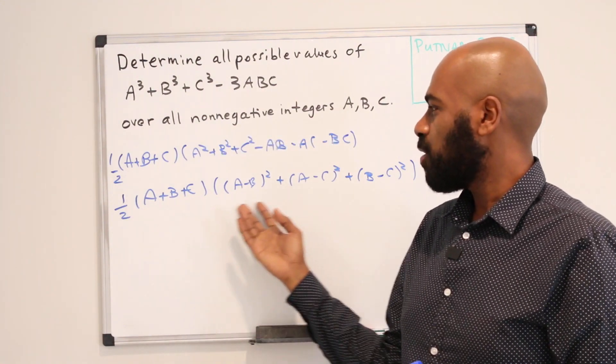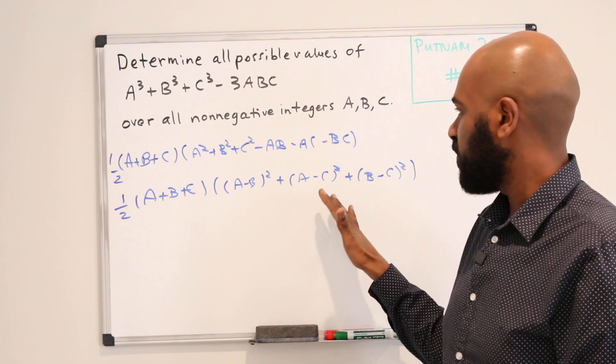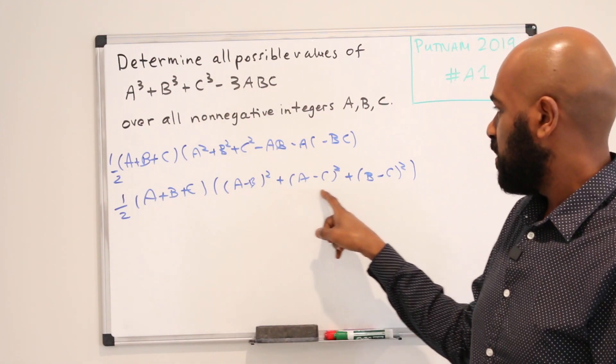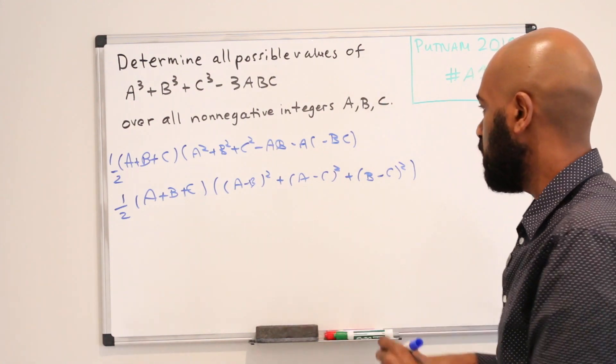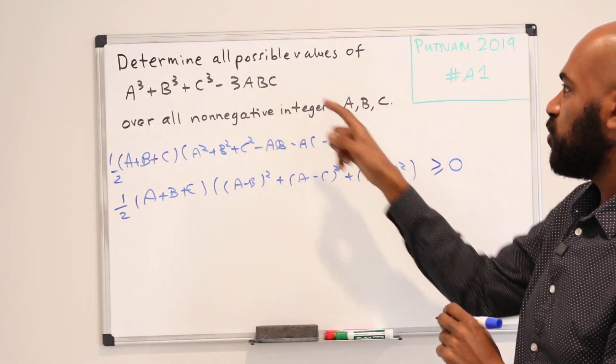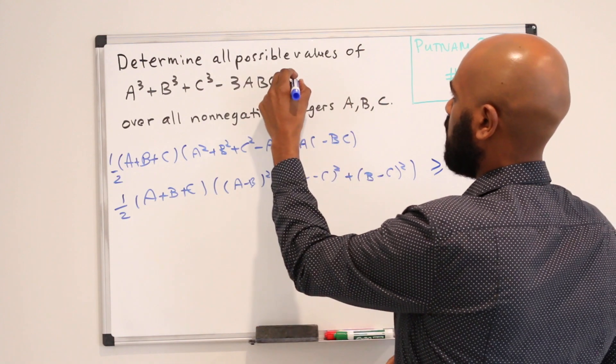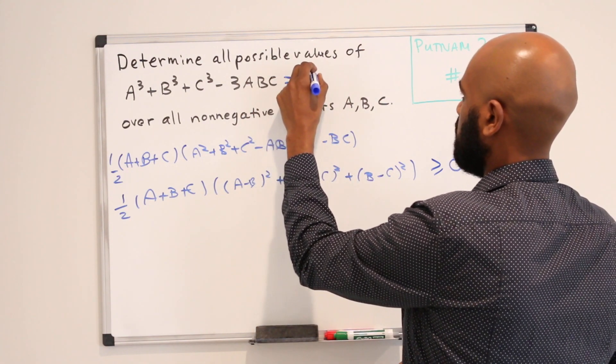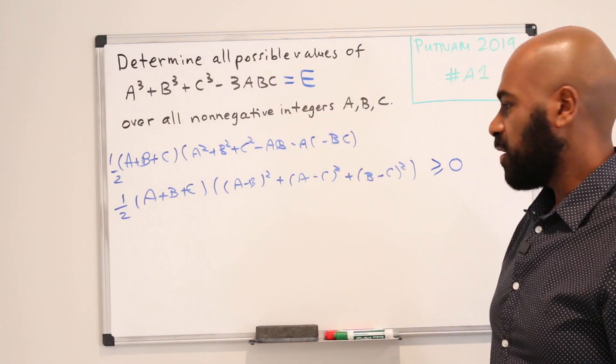Okay, so now in this factored form we can actually take a look at this and make an observation. So A, B, and C are non-negative integers and this is a sum of squares of integers so it is non-negative as well. So we get for free that this expression that we're interested in has to be non-negative no matter what A, B, and C are. Let's give this expression a variable name. Let's call it maybe E for expression. Okay, so E has to be non-negative.